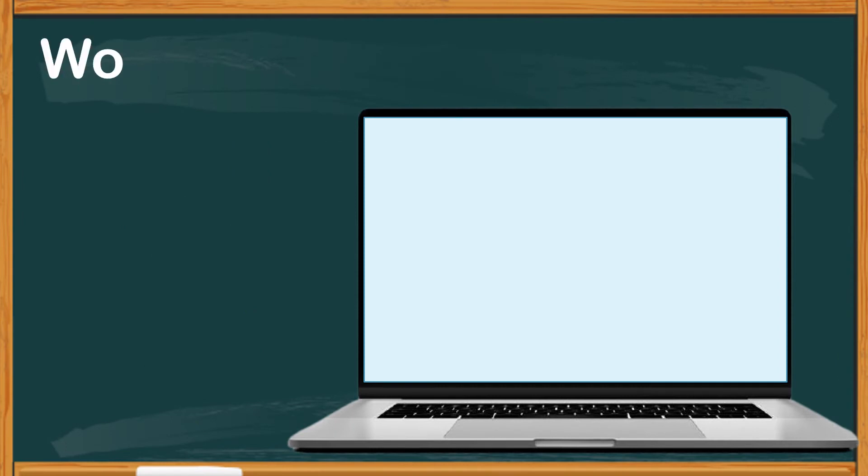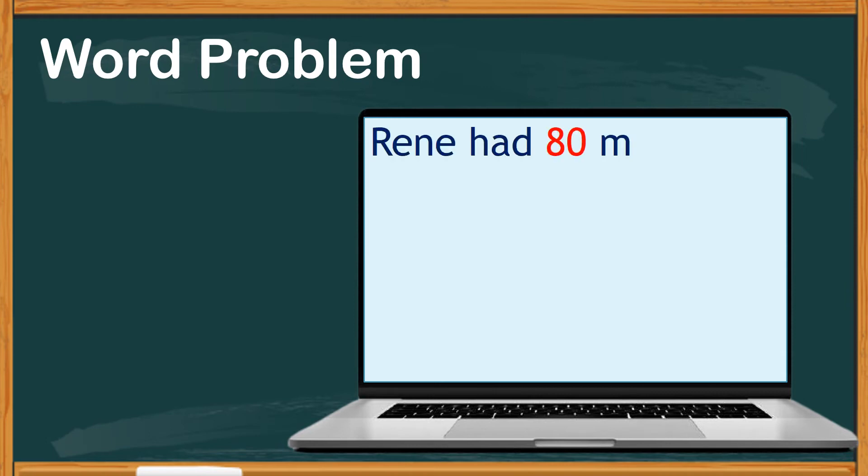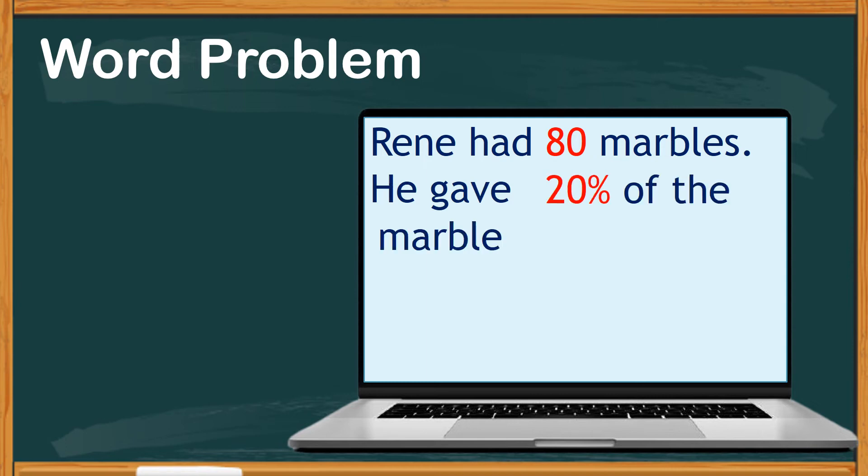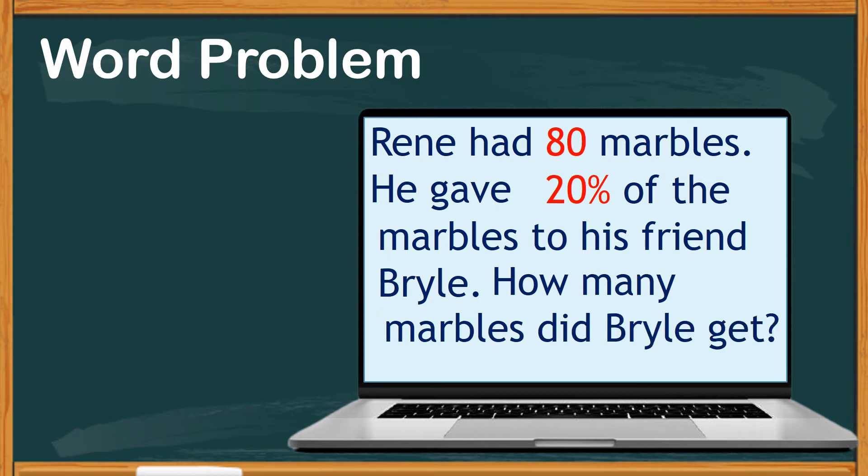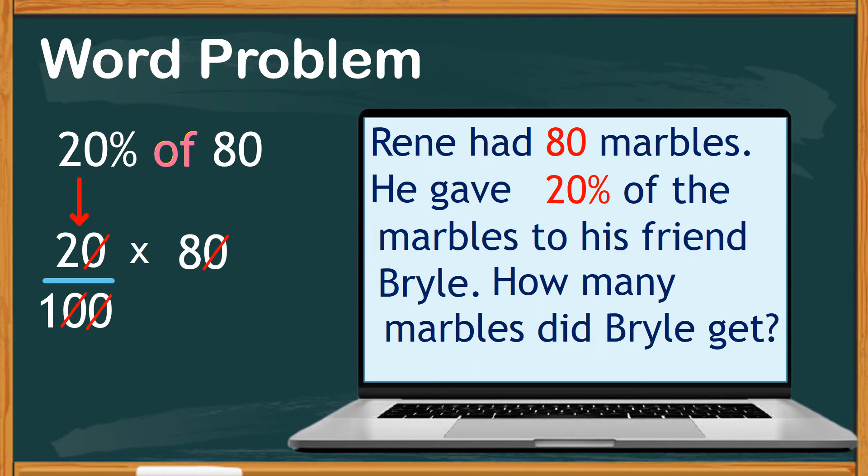Let's try to do simple word problems with percentage. Take a look at this one. Rene had 80 marbles. He gave 20% of the marbles to his friend Bryle. How many marbles did Bryle get? So to find the number of marbles Bryle received is to find what is 20% of 80. Express 20% as fraction with 20 over 100 and substitute the word of with the symbol x, which means 80. We can cancel the two zeros in the number above and do the same with the two zeros below.